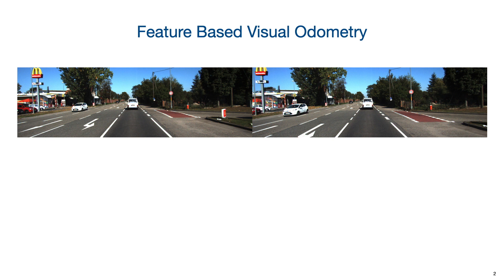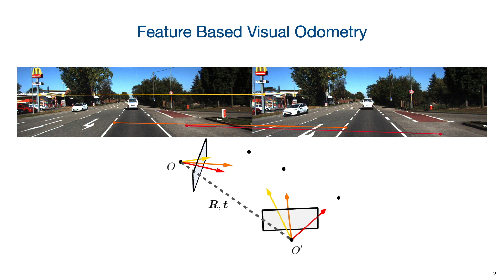First, extract features in both frames. Second, match the features. Third, use the matched features to perform relative pose estimation.